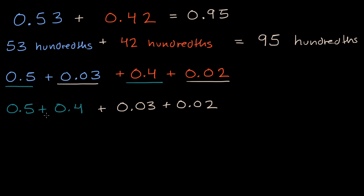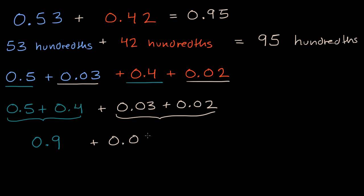So what do I get? Five-tenths and four-tenths — we've done this in previous videos — if I have five of something and I have four of it, that's going to be nine-tenths. And then three-hundredths plus two-hundredths is going to be five-hundredths, so plus 0.05. And nine-tenths plus five-hundredths is going to be nine-tenths and five-hundredths, which you could also say as 95 hundredths.